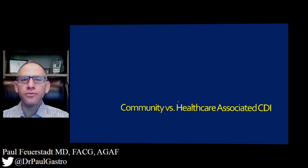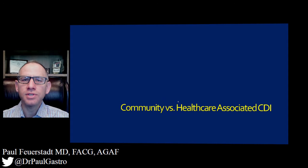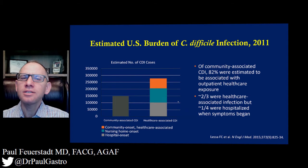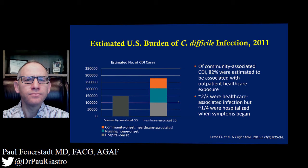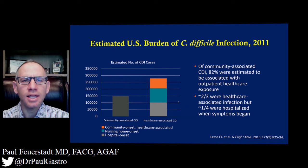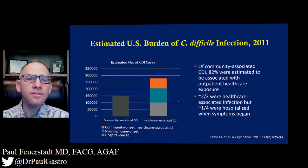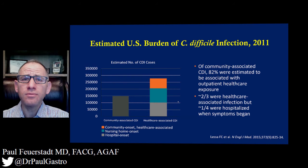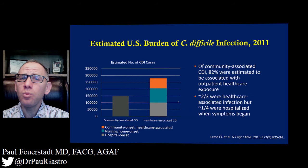Within this section, we're going to talk about differentiating community-associated C. difficile with healthcare-associated infection. We bring up again the study by Lessa et al. that we discussed in the epidemiology section. The Lessa et al. study looked at a cohort of patients in the United States and estimated that in 2011 alone, 453,000 individuals got C. difficile. Of that 453,000, approximately two-thirds had healthcare-associated infection and one-third had community-associated infection.